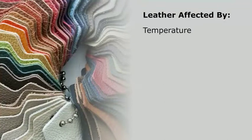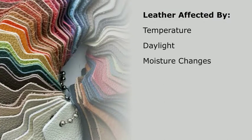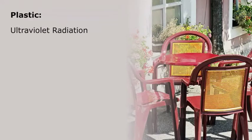Leather is affected by temperature, daylight, and moisture changes. Plastic can be affected by ultraviolet UV radiation, full-spectrum light, as well as temperature.